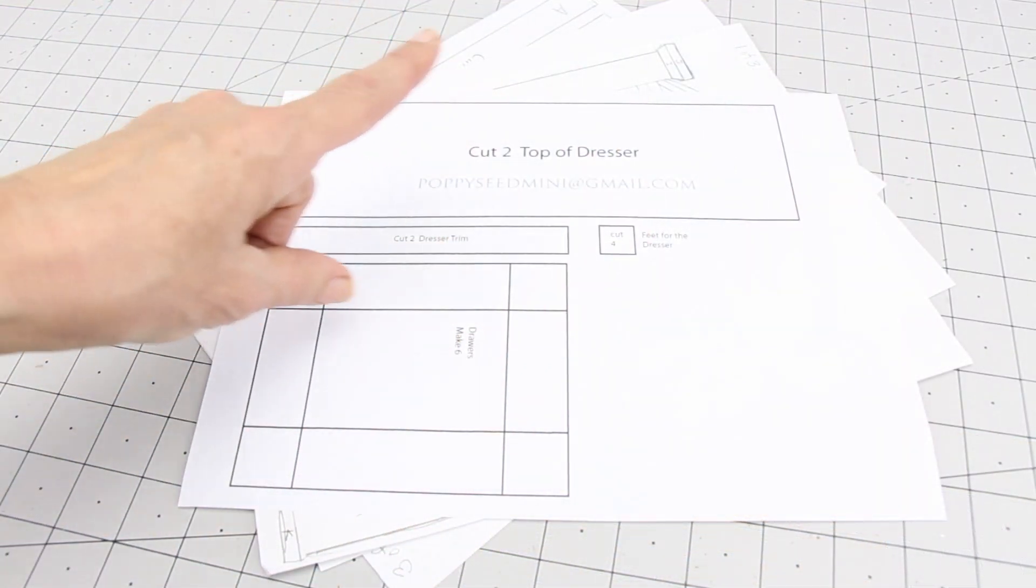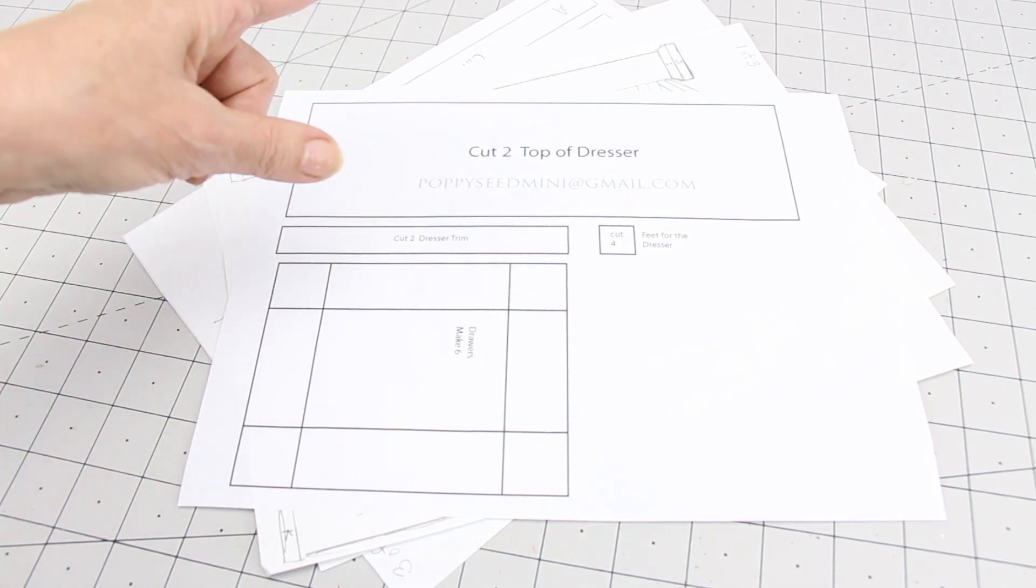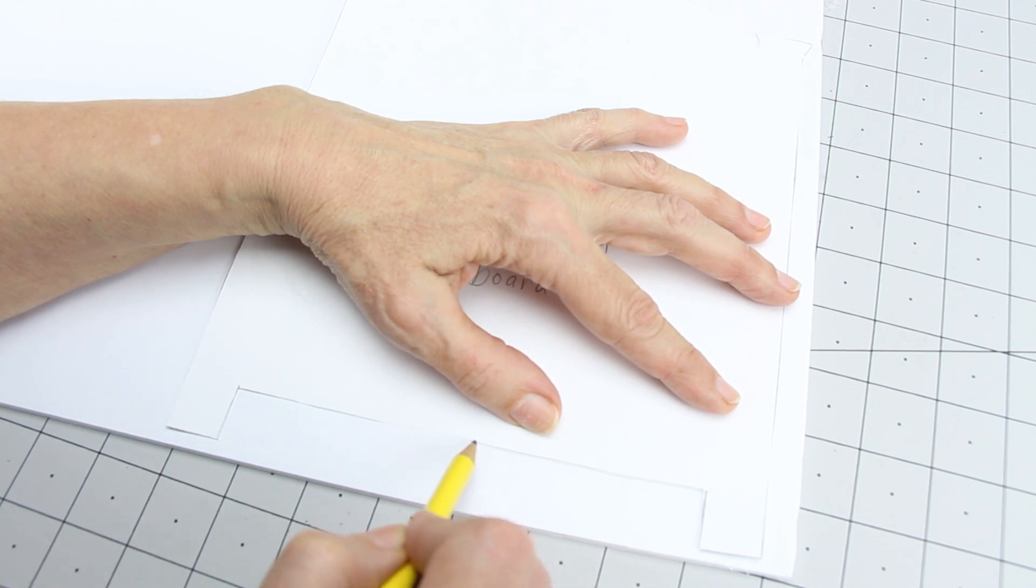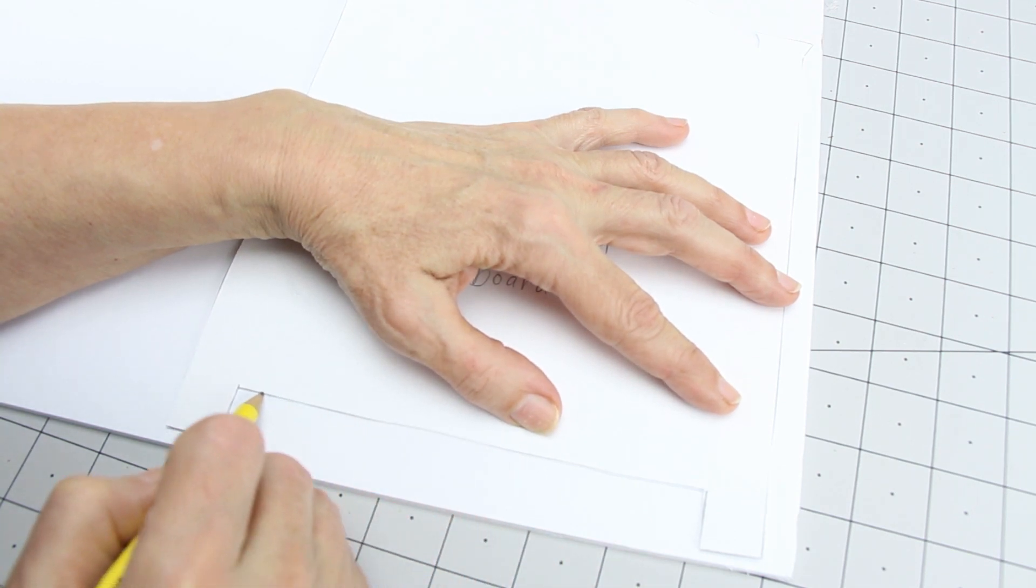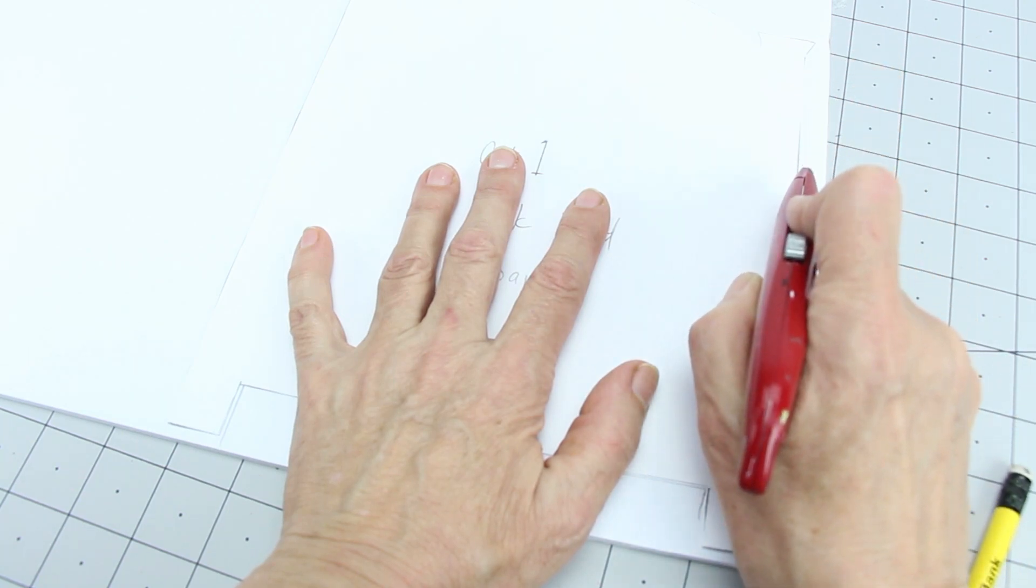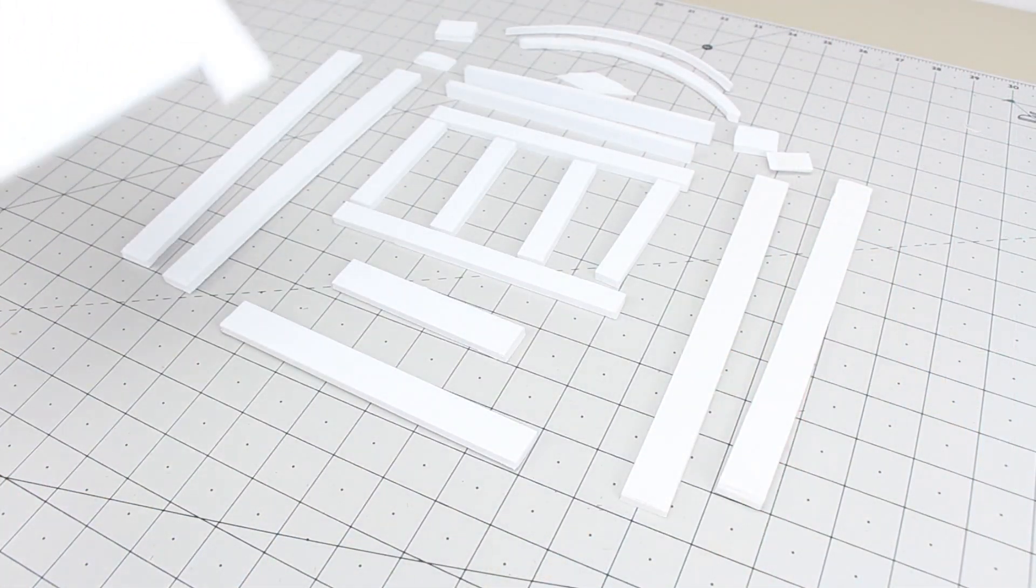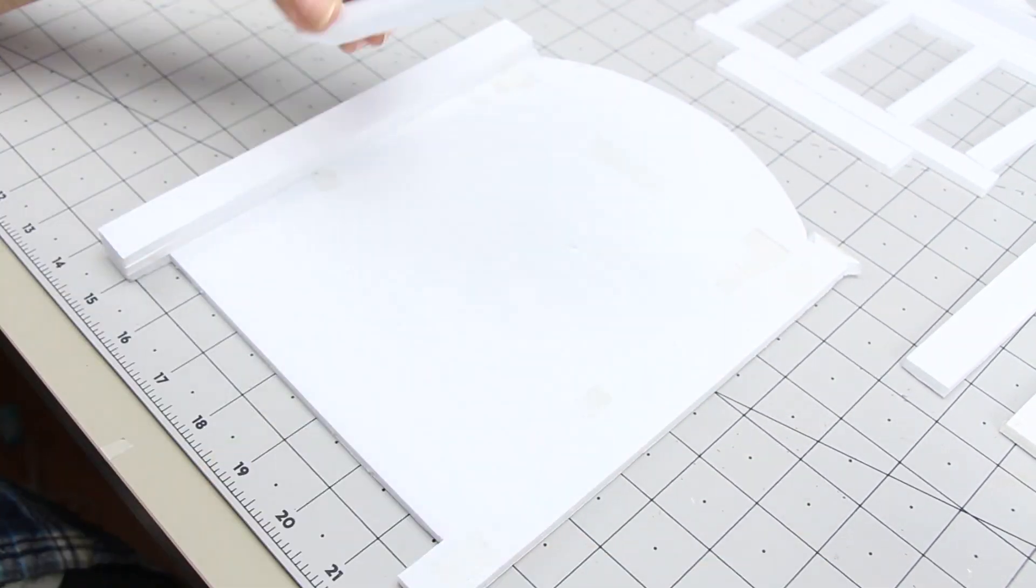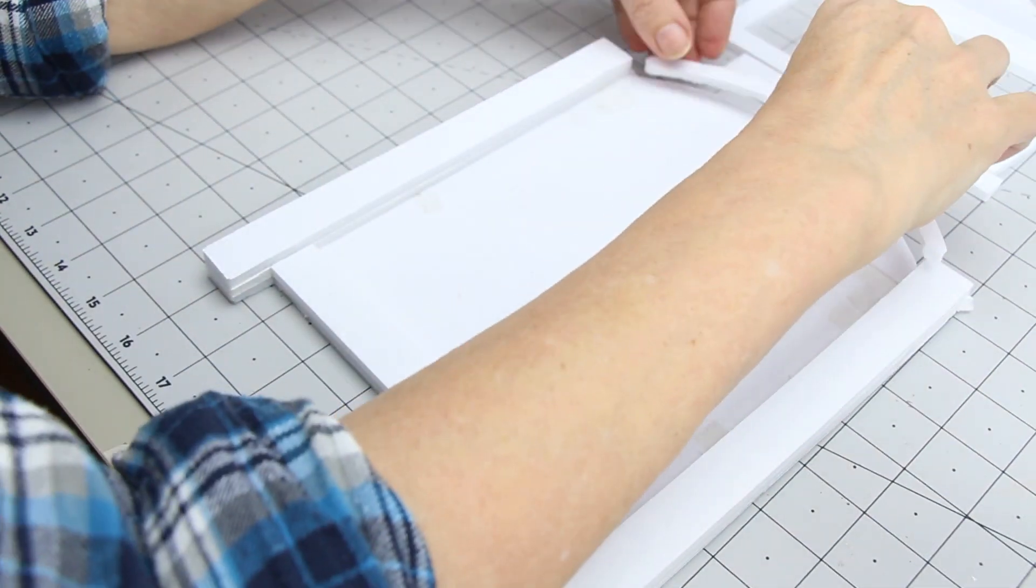Now we are going to make the furniture. The link for the pattern is in the description box below. Cut out your pattern and trace it on your foam core board. Cut your pieces out with an exacto knife. Starting with the headboard, follow your diagram to glue your pieces in place.